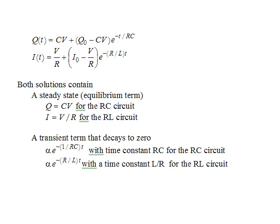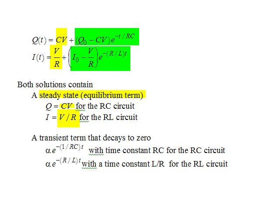There are important features in these solutions that you'll see over and over again. Both solutions contain a term that does not vary with time — this is called the steady state, or the equilibrium value. For the RC circuit, the equilibrium charge is CV; for the RL circuit, the equilibrium current is V over R. There is also a second term — a coefficient multiplying a decaying exponential — called the transient. The transient decays to zero at the time constant RC for the RC circuit and L over R for the RL circuit.